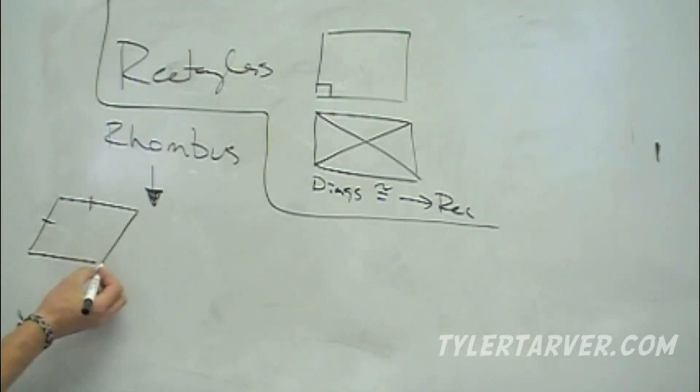In a parallelogram, opposite sides are congruent. If this is seven, what does this have to be? Seven. And we already told you that was consecutive, so what does its opposite have to be? Seven. So it has to be a rhombus.